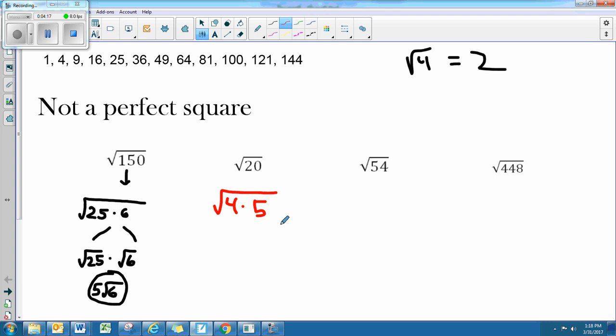After I break that into its factors, then you can split this into two square roots. So the square root of 4 times the square root of 5. 5 can't be broken down anymore. So next I would take the square root of 4, which is 2, and write that next to the square root of 5. So that means 2 times the square root of 5. That's your final answer.